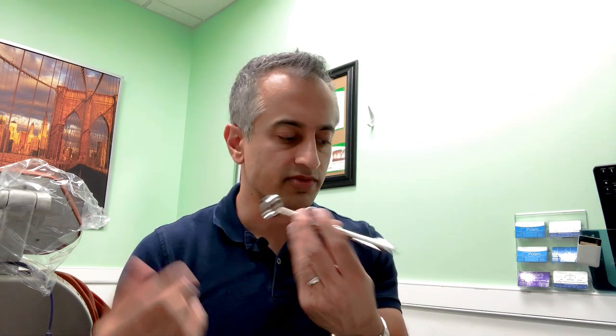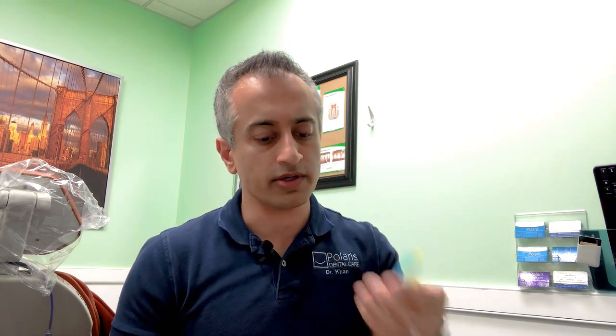So let's start with how to load one of these cartridges. Here we have an aspirating syringe, a Cook-Waite design from Benco, and we have two different types of needles: a blue short needle and a yellow long needle. They both work exactly the same when it comes to assembling a cartridge.